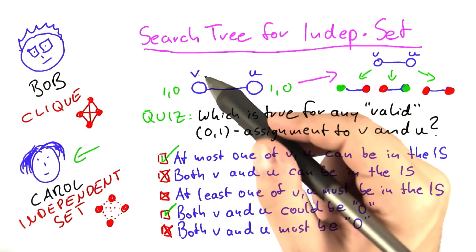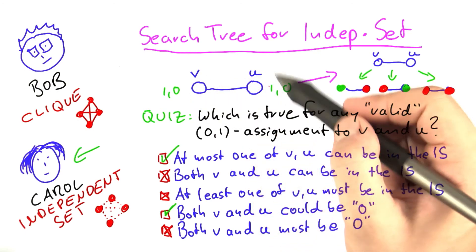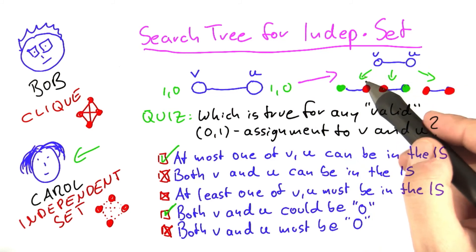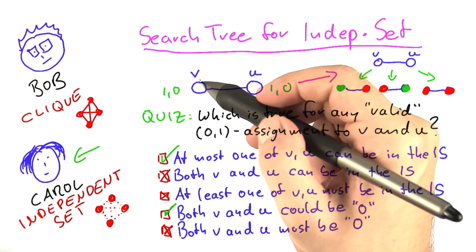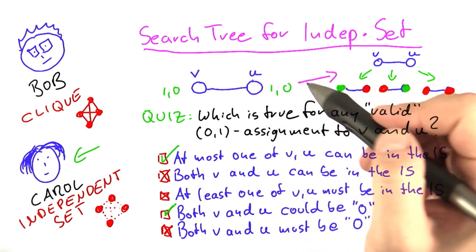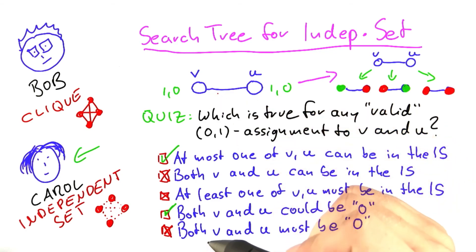As long as we find an edge between two vertices v and u, for which v has no assignment yet and u has no assignment yet, then we can branch into exactly three possibilities. Now, what happens if either v or u already has an assignment? For vertex cover, I told you what would happen then. This time, I will let you figure this out.